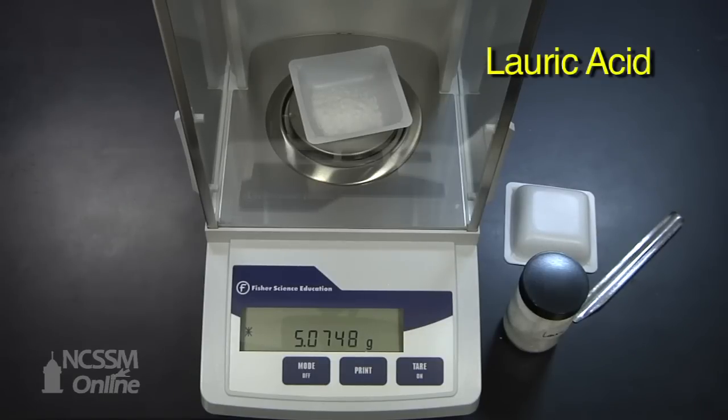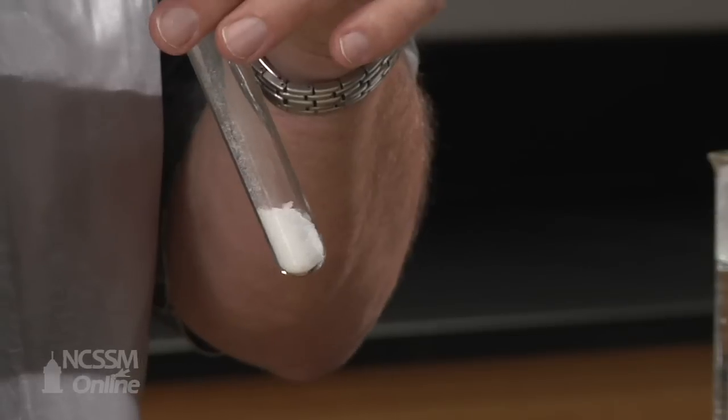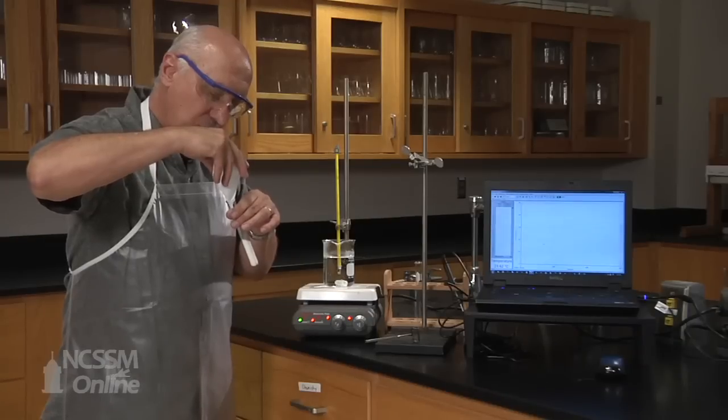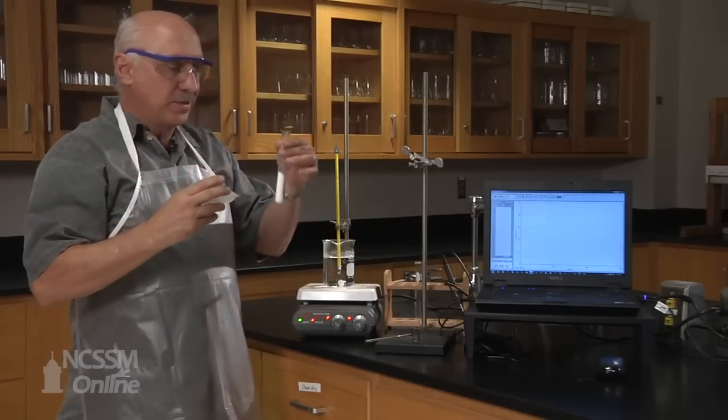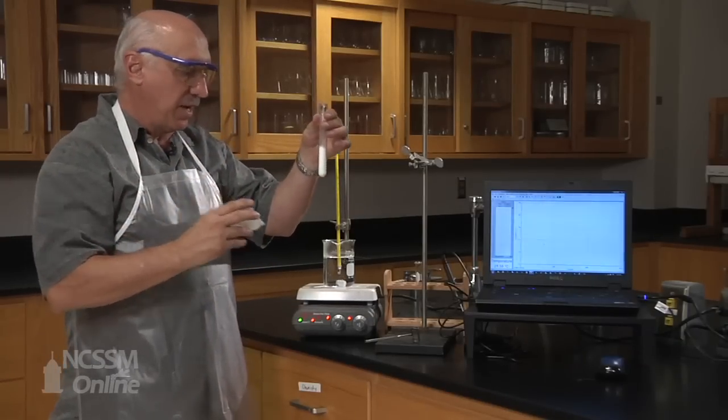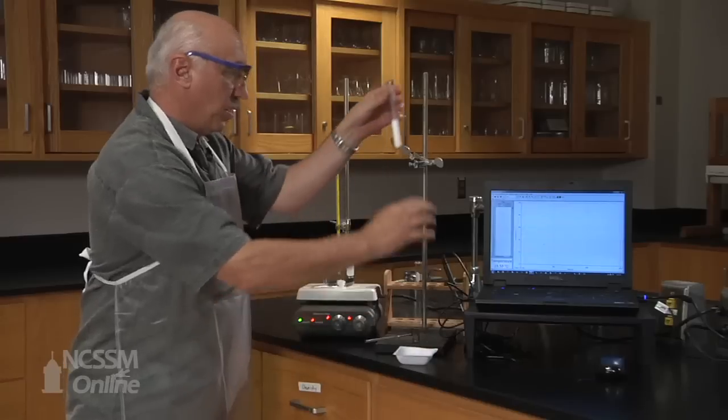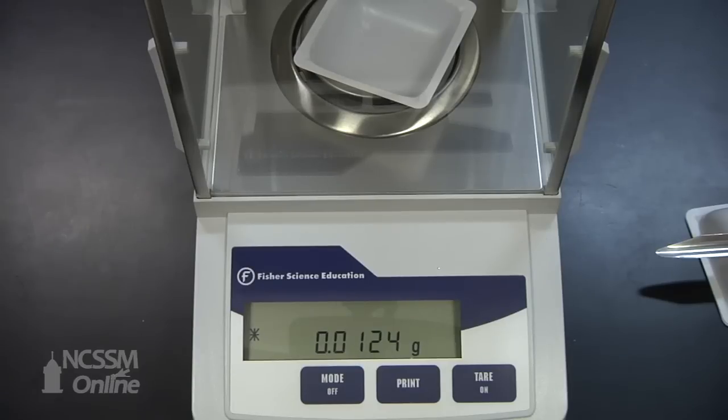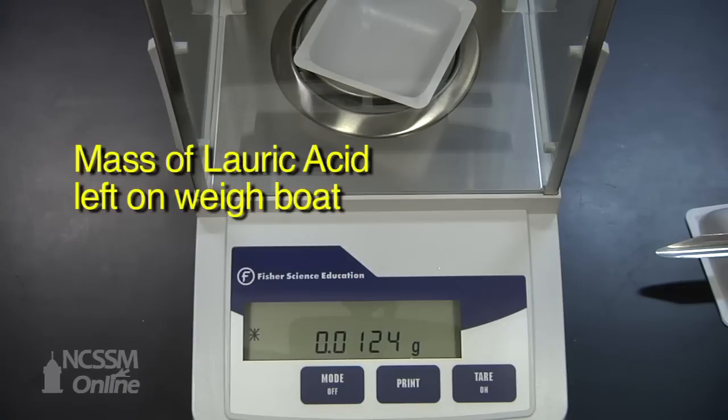Now we're going to add the lauric acid to the test tube. Okay, so now we have added the lauric acid to the test tube. But before I proceed, because some of the lauric acid was left in our weighboat, this is the mass of the amount of lauric acid that did not get into the test tube.